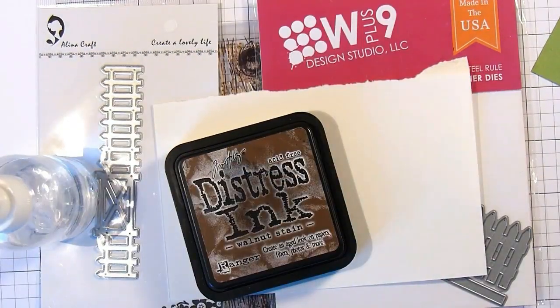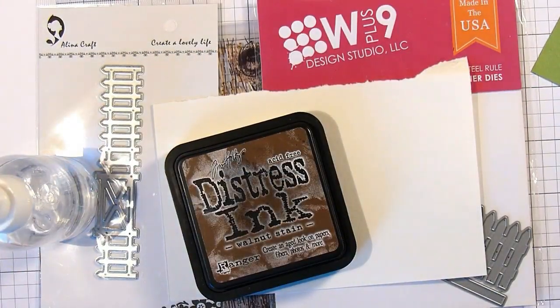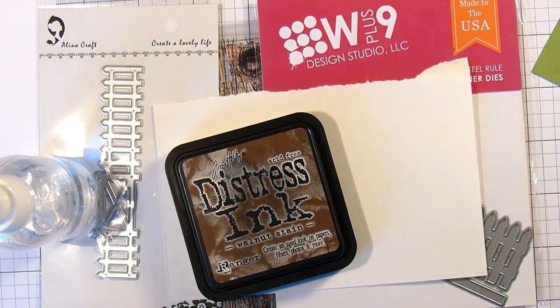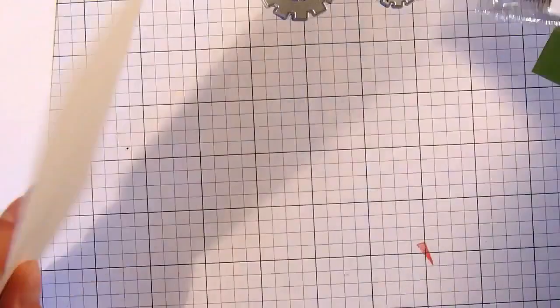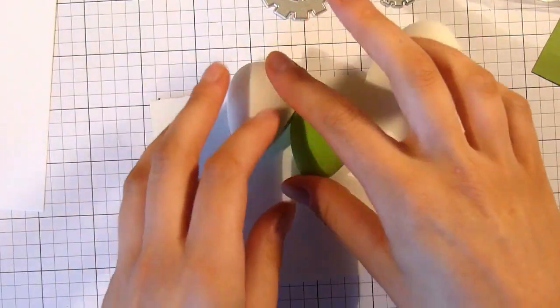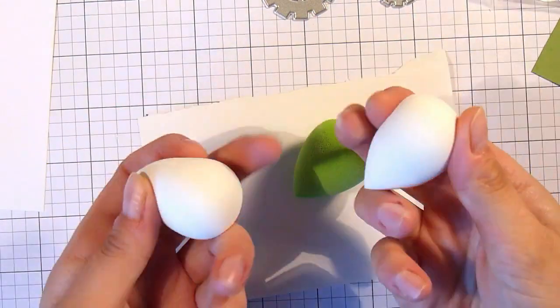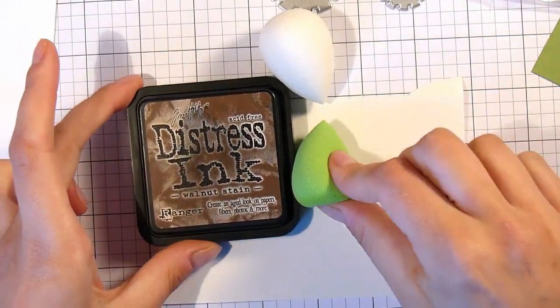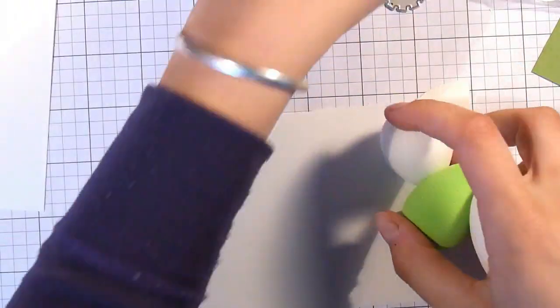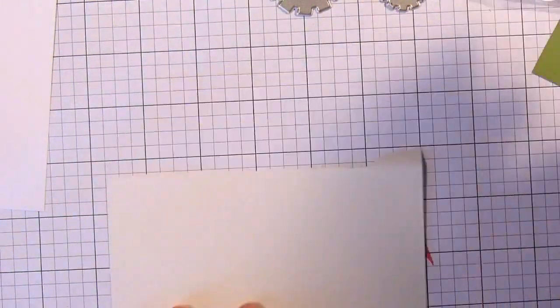I'm using some Walnut Stain Distress Ink to create the background. I could have used some brown cardstock but I wanted the mottled effect that this would give me. So I also bought these sponges from AliExpress and someone had said that they were great for inking up to use as a blending tool.